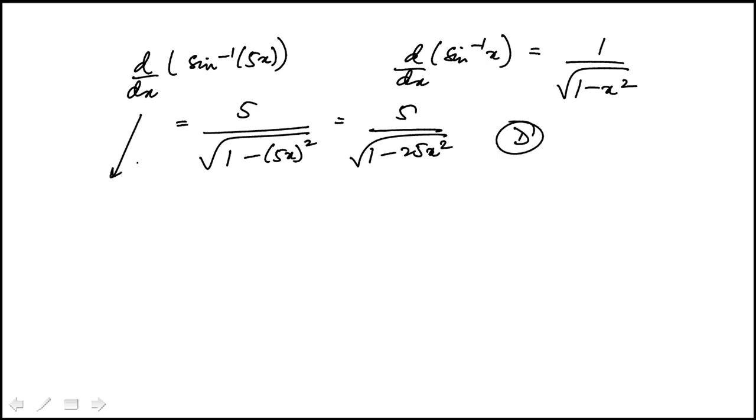The other method, which I sometimes use if I don't remember the formulas, is to set sin inverse 5x equals θ. That means sin θ equals 5x, and I'm going to differentiate both sides with respect to x.